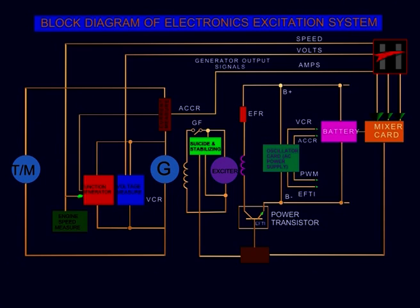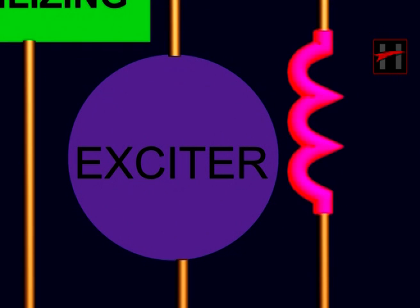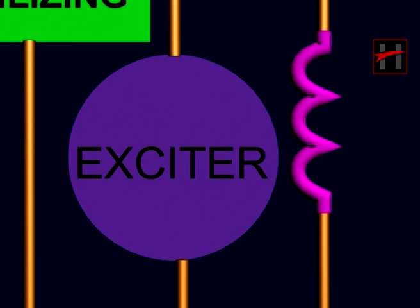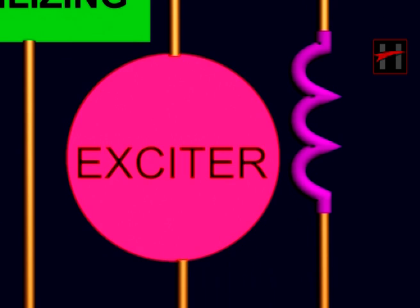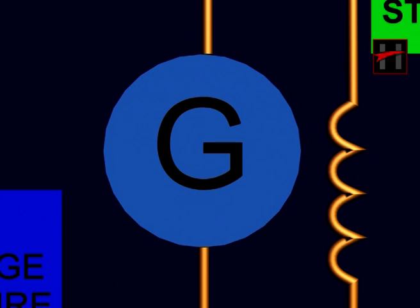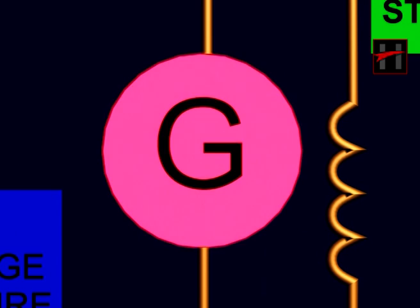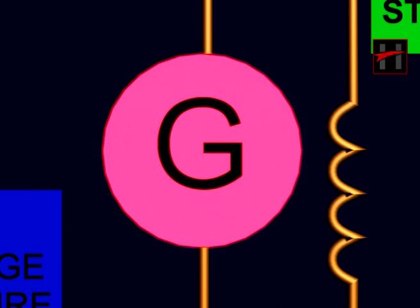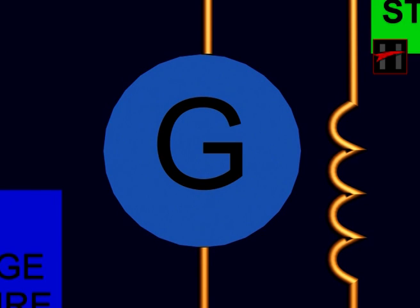The excitation system controls the exciter field current, in turn controlling the exciter output which feeds the traction alternator or the traction generator field. Thus, the traction alternator or the traction generator output is suitably controlled.